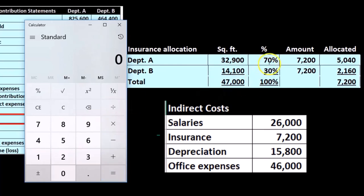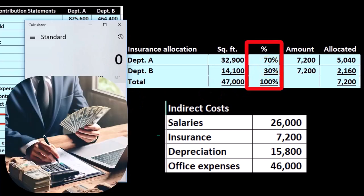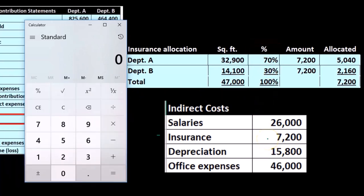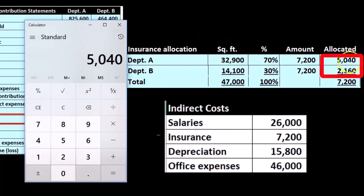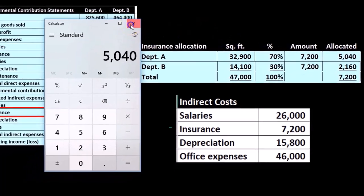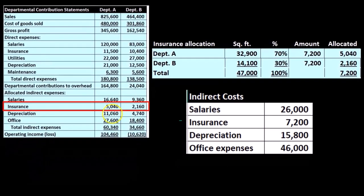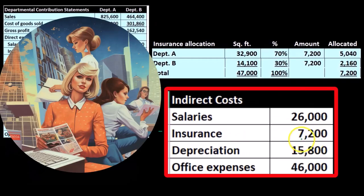So we take these percentages to break out the insurance on a 70/30 basis. We take the $7,200 insurance times 0.7, giving us $5,040, and $2,160 for the other portion. That's how we broke it out.